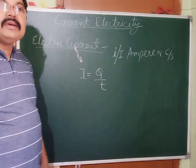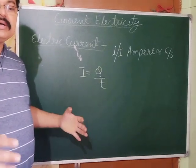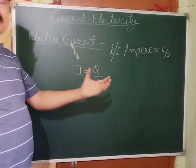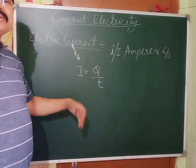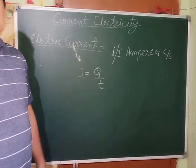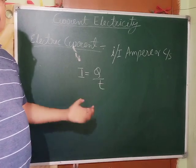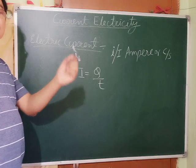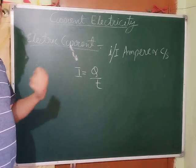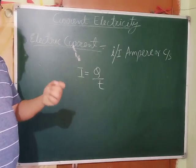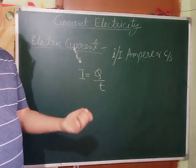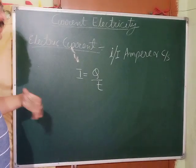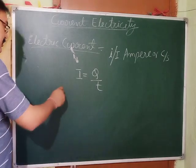For example, suppose 100 coulomb charge is flowing in 10 seconds. So Q upon T gives the average current. But if you want the current at a particular moment — say the 5th second — that is called instantaneous current.